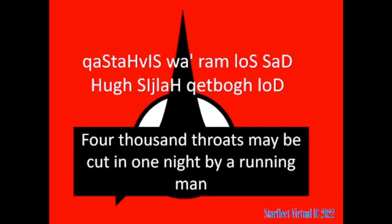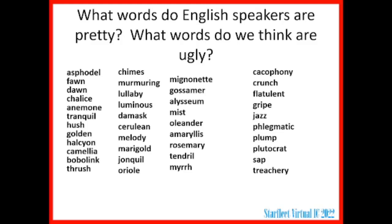Research has been done on words that English speakers think sound pretty versus words that people think sound ugly. If you look at these two lists, you'll quickly realize the list on the left is going to be the positive ones and the list on the right is negative. Part of that, of course, is what the words mean — melody and gossamer are pleasant things, cacophony and flatulent aren't. But you'll also notice that there are some sounds that occur more on one side or the other. Over in the left-hand list, you see a lot of ul and ur sounds, which linguists call liquids, m and n sounds — those are nasals — and b and d.